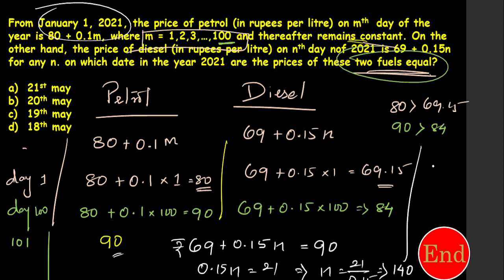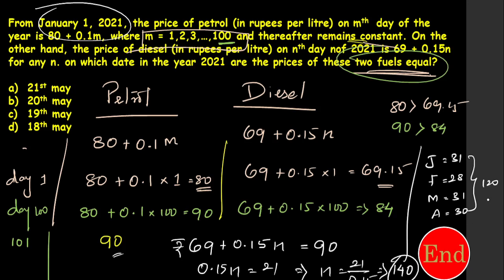So from January 1, I need to find the 140th day. January has 31 days, February has 28 days (2021 is not a leap year), March has 31 days, April has 30 days — that is 120 days total. So 140 minus 120 equals 20 more days into May. The answer is May 20th, when both fuel prices are equal.